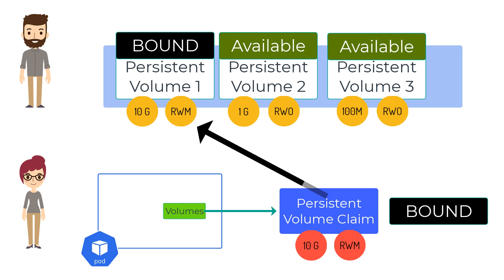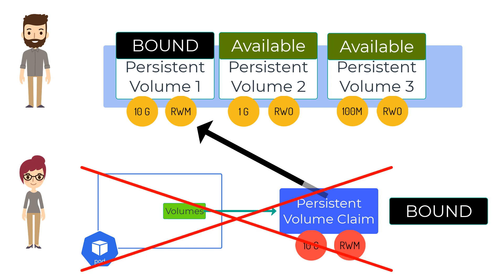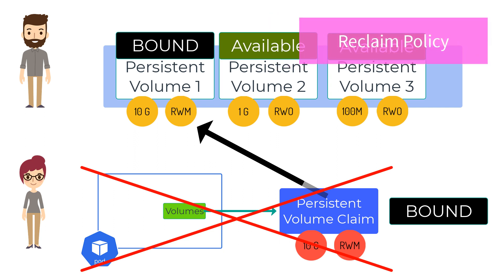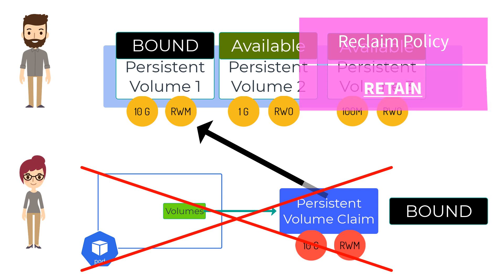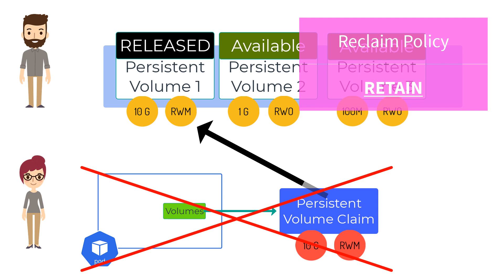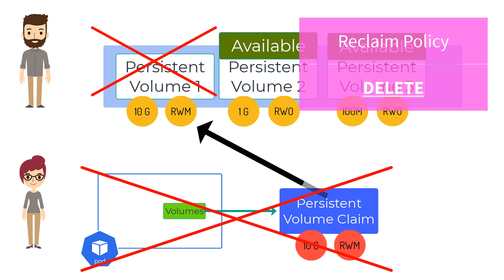Now let's say the app is retired and the organization no longer needs it. When the app — that is, the pod and the persistent volume claim — gets deleted, what happens to the persistent volume and the underlying storage? Well, this depends on the reclaim policy defined on the persistent volume. If the reclaim policy is set to retain, the volume will change phase from available to released; however, the data will still be available and no other pod can claim that particular persistent volume. If the reclaim policy is set to delete, the persistent volume as well as the underlying storage will be deleted as soon as the persistent volume claim is deleted.